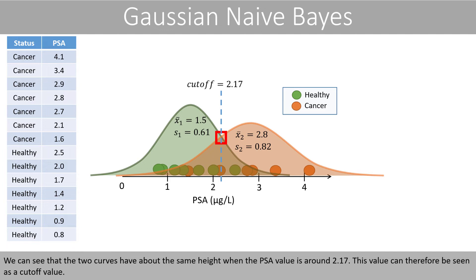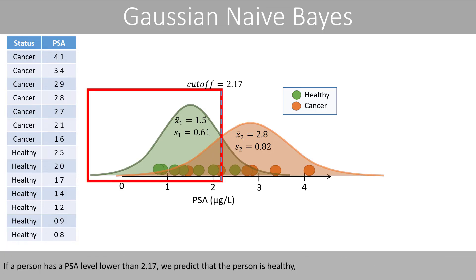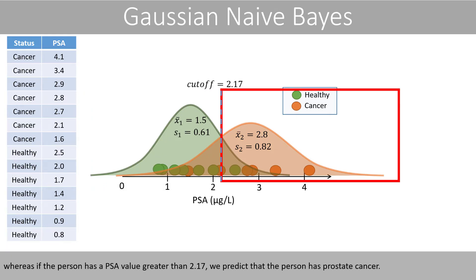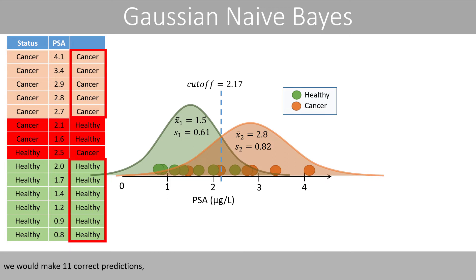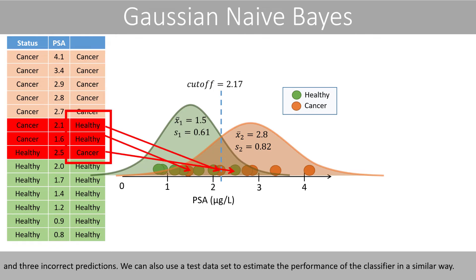We can see that the two curves have about the same height when the PSA value is around 2.17. This value can therefore be seen as a cutoff value. If a person has a PSA level lower than 2.17, we predict that the person is healthy, whereas if the person has a PSA value greater than 2.17, we predict that the person has prostate cancer. If we use the Naive Bayes classifier to predict the class of the training data given the PSA values, we would make 11 correct predictions and 3 incorrect predictions. We can also use a test dataset to estimate the performance of the classifier in a similar way.